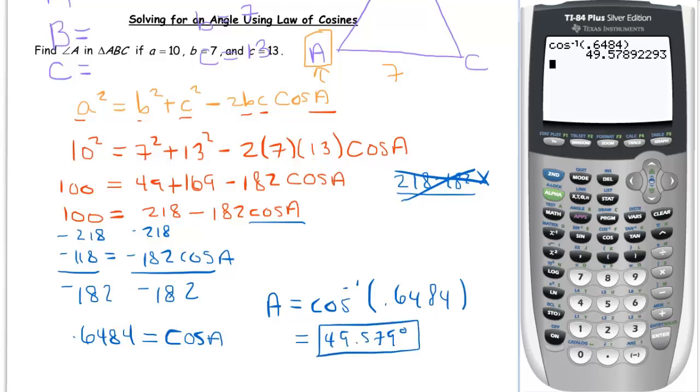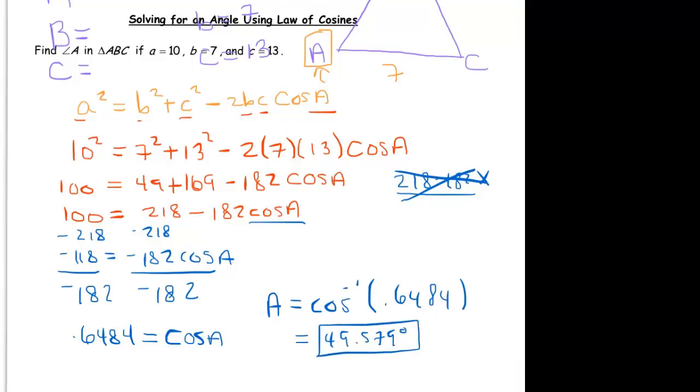So that's how you solve for an angle using the law of cosines. And just be wary of this step right here. That's the one to pay attention to. Everything else I think is pretty straightforward. You're able to do that.